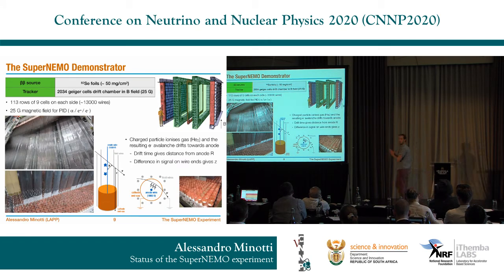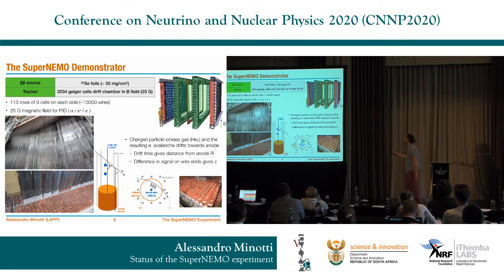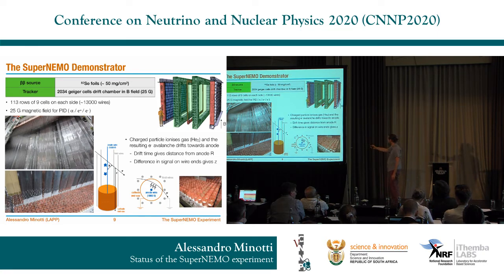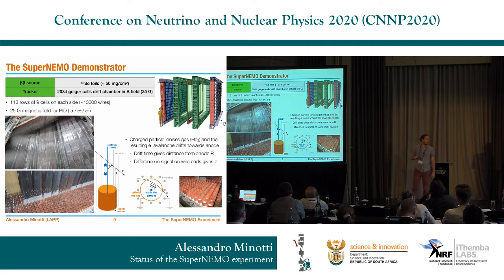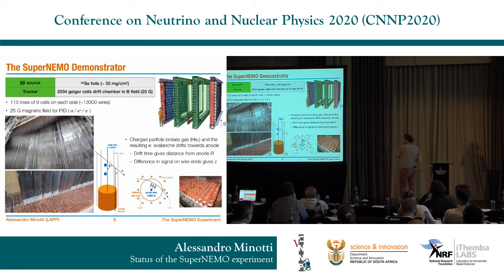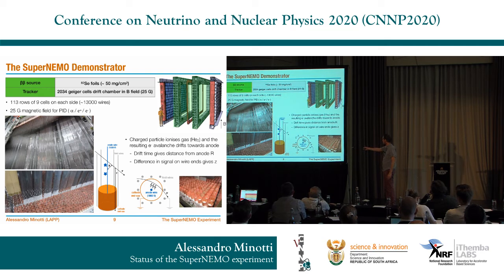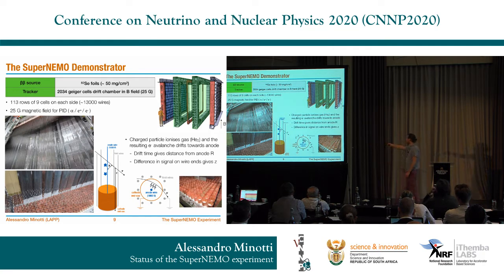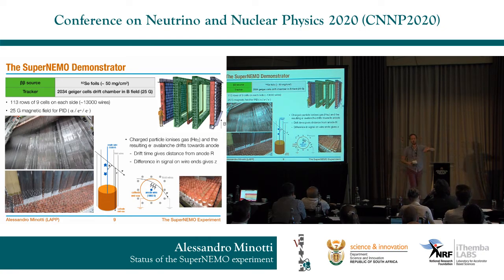The source is sandwiched between tracking volumes. For SuperNEMO, these are drift chambers with roughly 2,000 Geiger cells arranged in 113 rows with 9 cells each. The whole volume is immersed in a magnetic field of 20 to 25 Gauss to distinguish alphas that go straight from electrons and positrons that bend in different directions. Each cell has an anode wire at 1,800 volts; when a particle crosses the cell it produces an avalanche. The drift time gives the distance from the wire, while cathode end-cap signals give the Z-position, allowing precise track reconstruction.